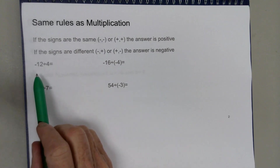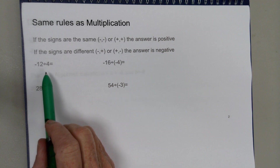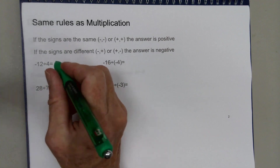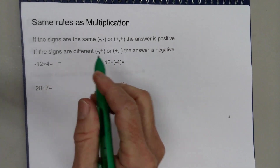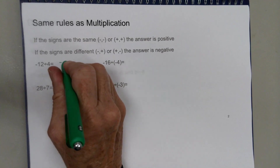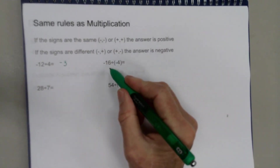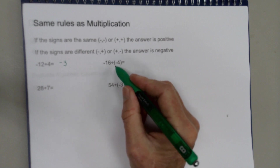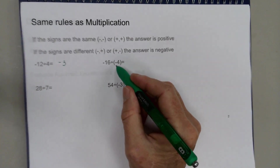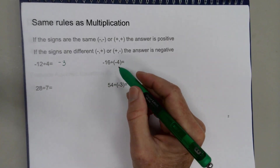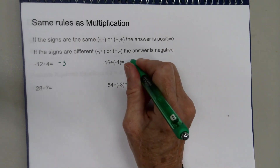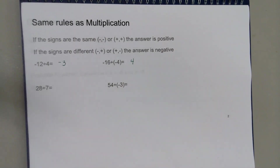For example, negative 12 divided by 4 — the signs are different, so the answer is negative, and 12 divided by 4 is 3, giving negative 3. Negative 16 divided by negative 4 — the signs are the same, so the answer is positive. If the signs are the same, the answer is positive; if the signs are different, the answer is negative.